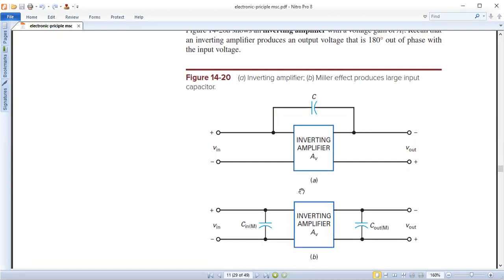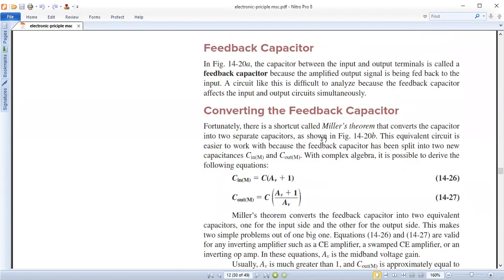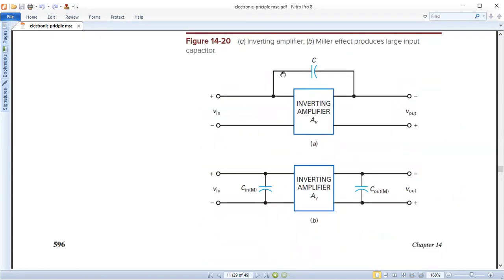The capacitor is a feedback capacitor. The capacitor between the input and output terminal is called feedback capacitor because the amplified output signal is being fed back to the input. A circuit like this is difficult to analyze because the feedback capacitor affects the input and output circuit simultaneously. So this capacitor is a feedback in the usual cases inverting amplifier.